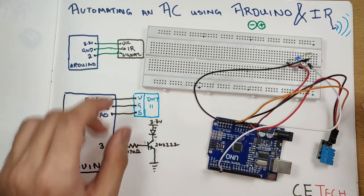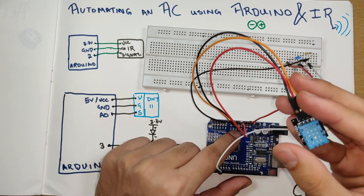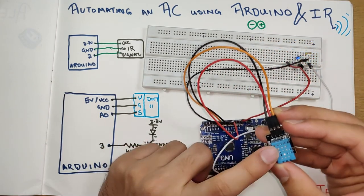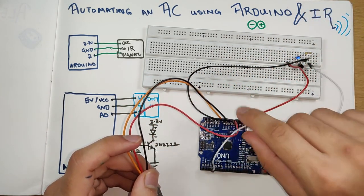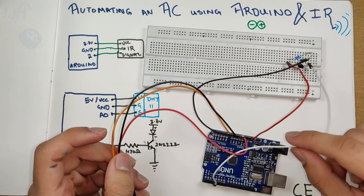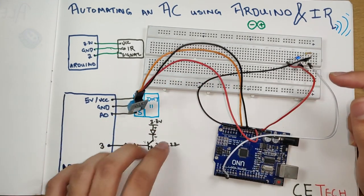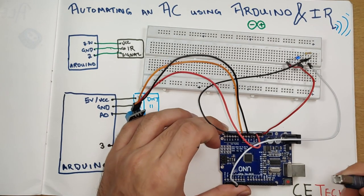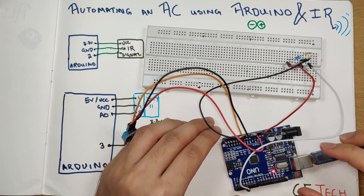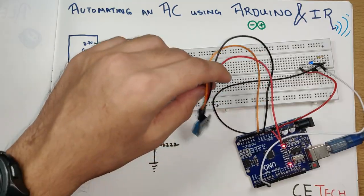The circuit is now assembled on the breadboard. Three wires go to A0, VCC (5V), and signal and ground for the DHT11. The base of the transistor is connected to digital pin 13, and all remaining connections follow the circuit diagram. We can now connect the Arduino to the computer and move on to the second part of the code.